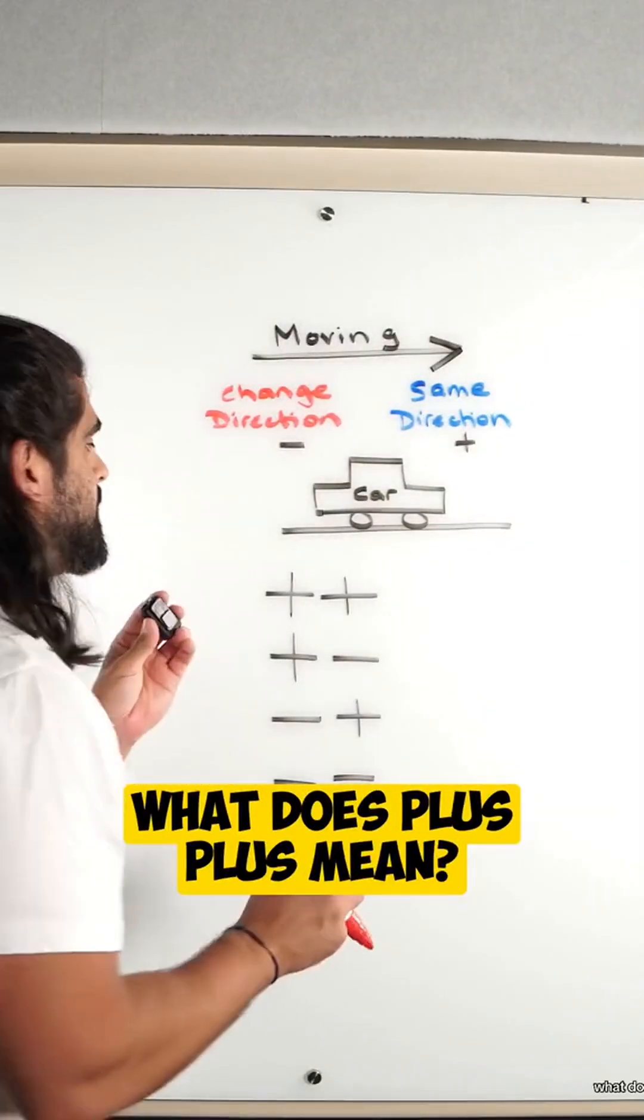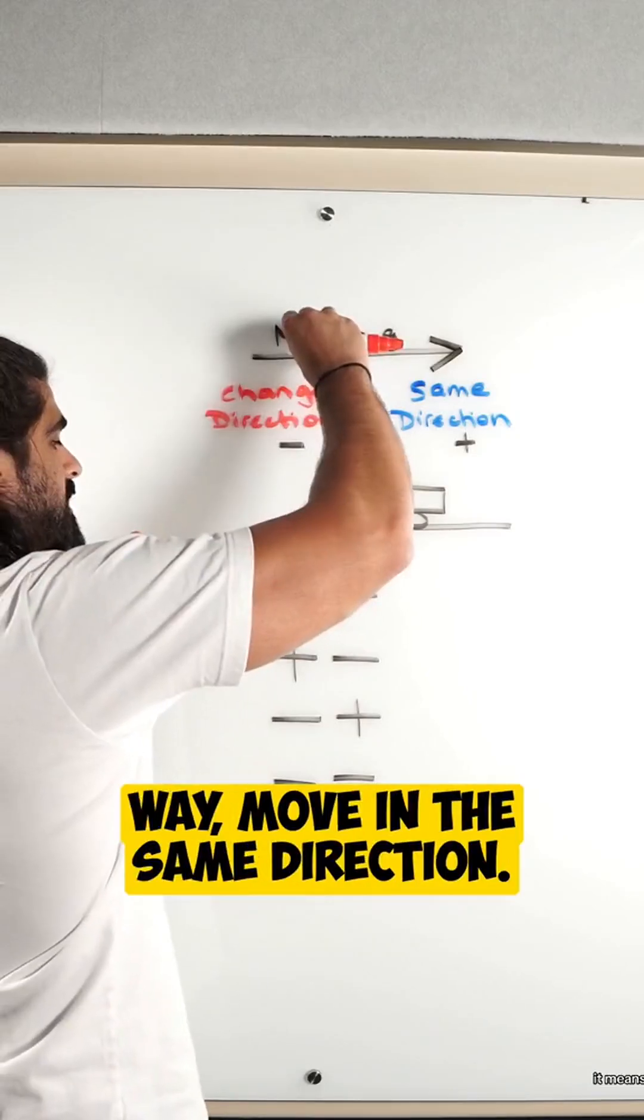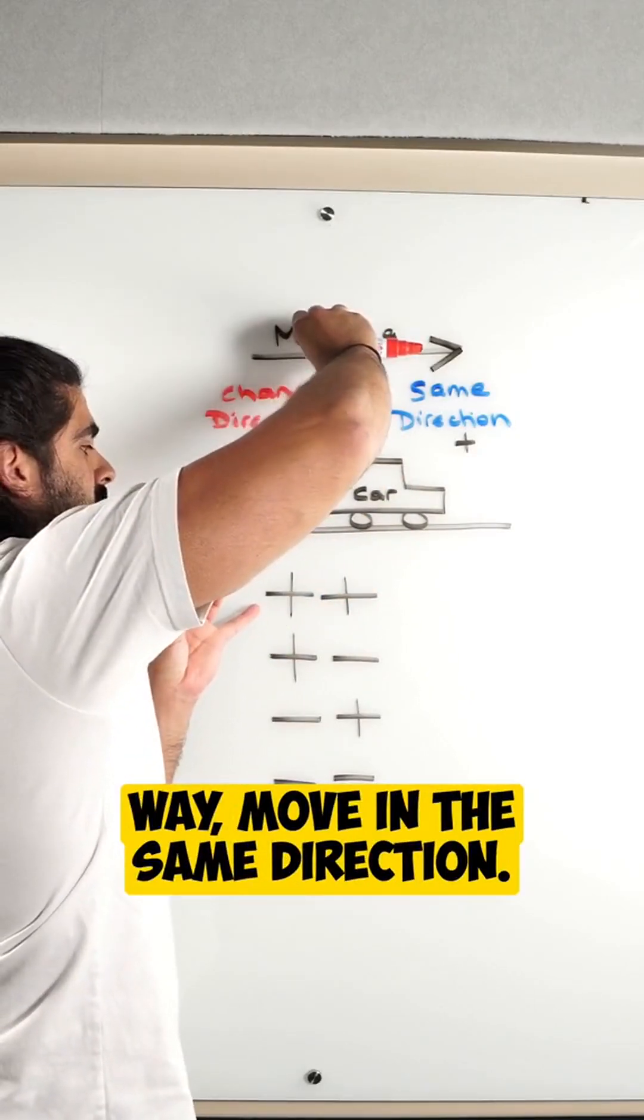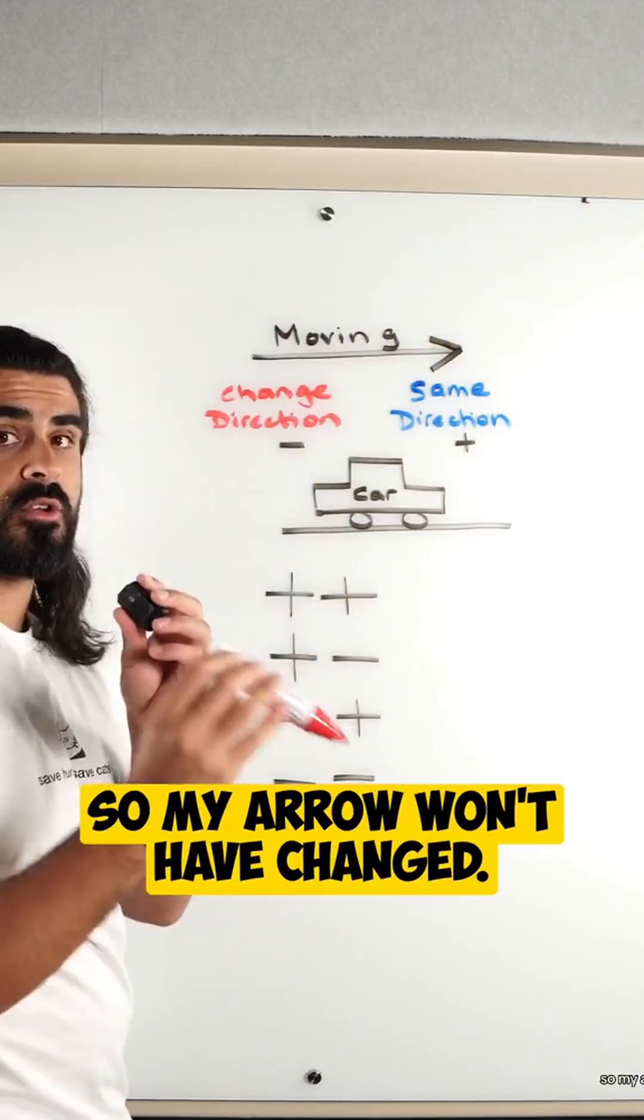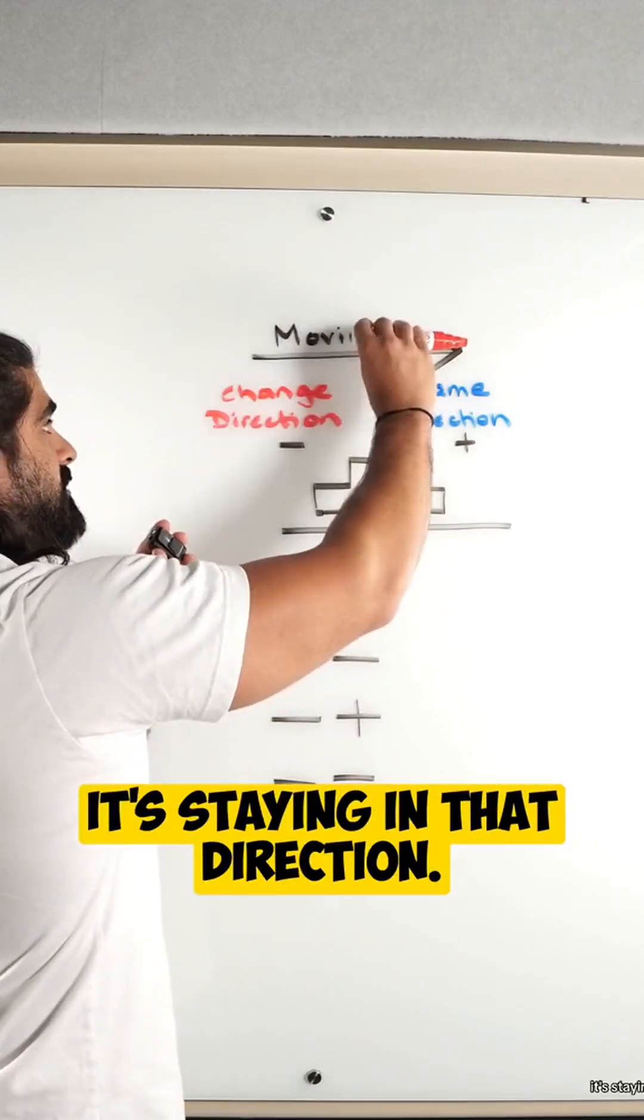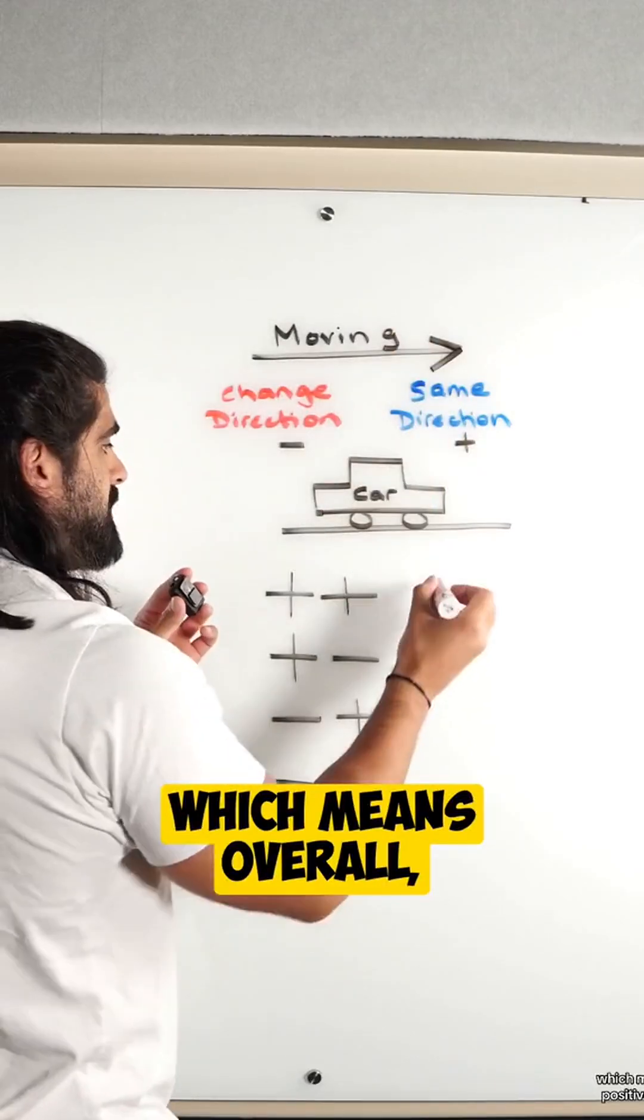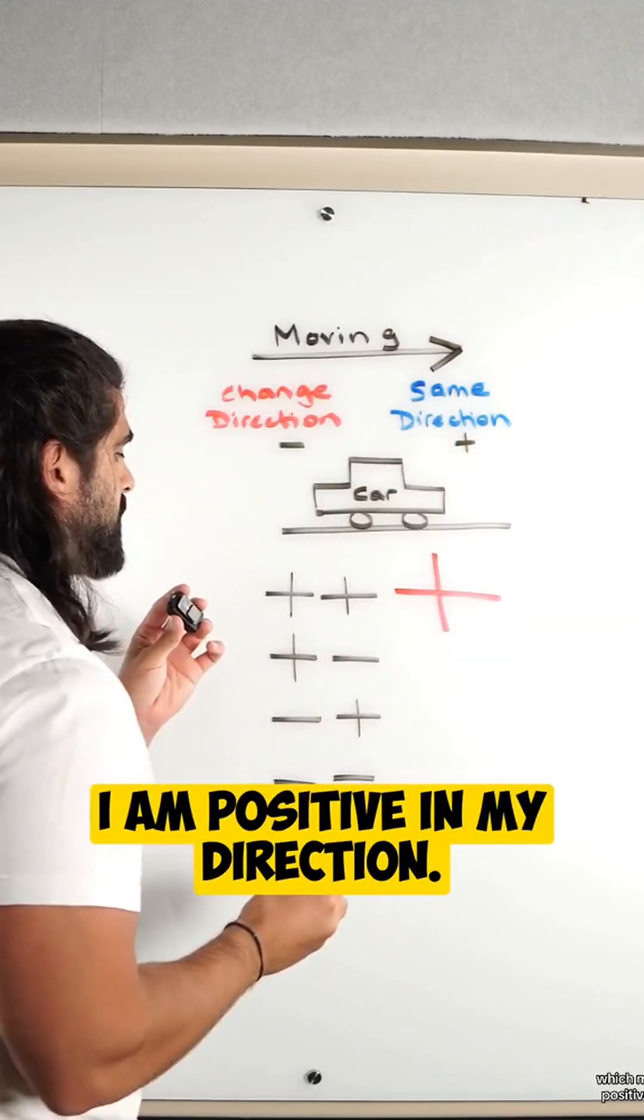What does plus plus mean? It means if I'm moving this way, move in the same direction. So my arrow won't have changed. It's staying in that direction, which means overall I am positive in my direction.